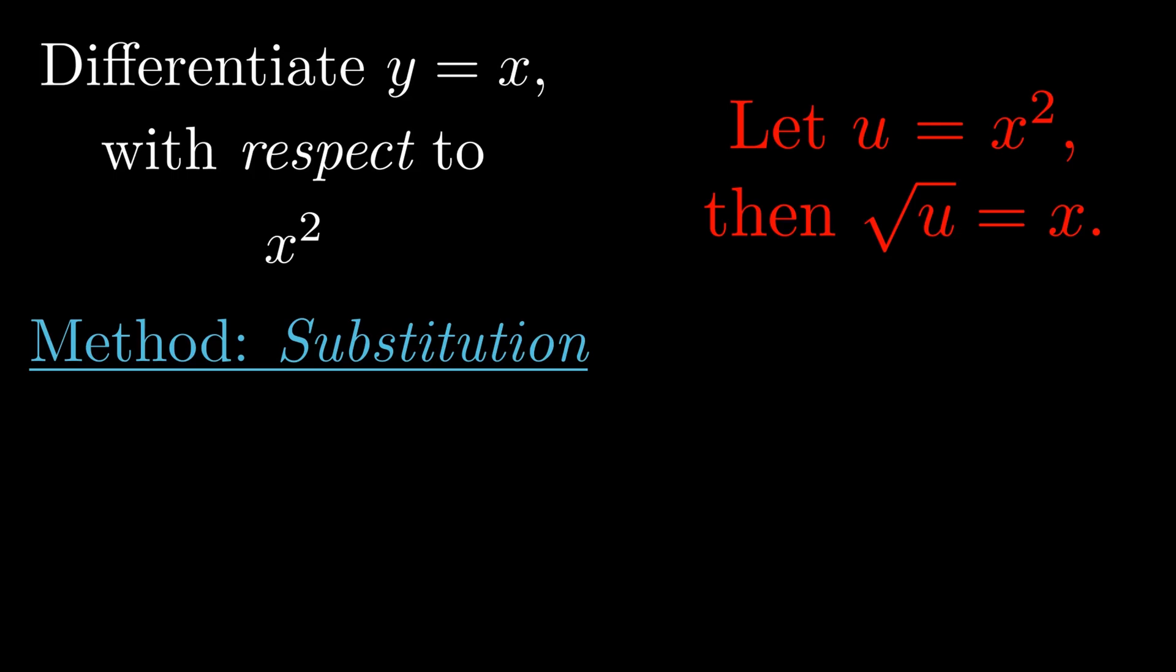Remember, we are taking the derivative of y with respect to x squared. This is equal to the derivative of x with respect to x squared. So we now have the derivative of the square root of u with respect to u, which is really easy to solve.